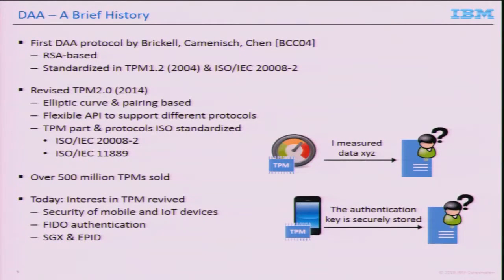The first protocol was a joint cooperation of privacy groups, cryptographers, and security experts. It was proposed by Brickell, Camenisch, and Chen in 2004 and was adopted by the TCG, standardized in the TPM 1.2 specification and later in ISO. The first scheme is based on RSA, but in the newer TPM 2.0 specification they went to elliptic curve and pairing-based schemes for efficiency. The newer TPM interfaces have a nice design where the first TPM spec was hard-coded for one protocol, but the new one offers flexible APIs supporting many different DAA protocols.